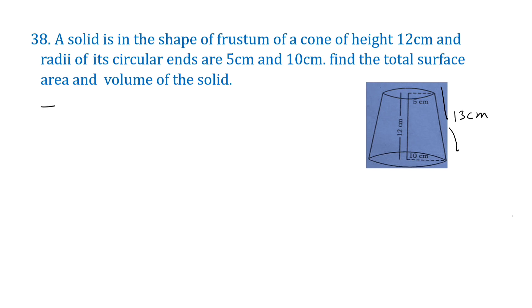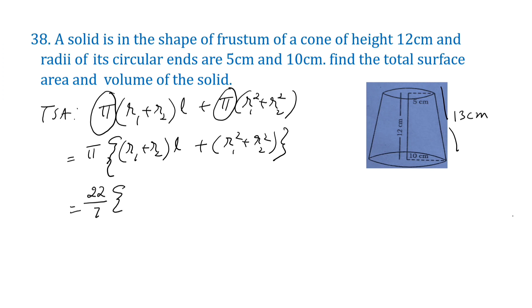Now we can find the TSA of the frustum of cone. Formula is π(r1 + r2)L plus π(r1² + r2²). Now we can take π outside: π[(r1 + r2)L + r1² + r2²]. π is 22/7, r1 is 5, r2 is 10.